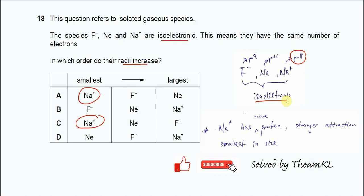Followed by neon, because neon's proton number is larger than fluoride. And of course, the largest is fluoride, because the proton number is the least among these three. So the nuclear attraction is weaker towards the electrons and it's largest. That's why the answer is C.